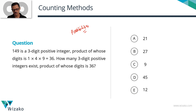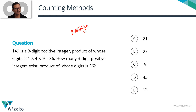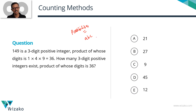149 is a three-digit positive integer whose product of digits is 36: 1 × 4 × 9 = 36. We need to find how many such three-digit positive integers exist whose product of digits is 36. Let's say the number is ABC, so the product A × B × C should equal 36. We need to see how many such numbers exist.